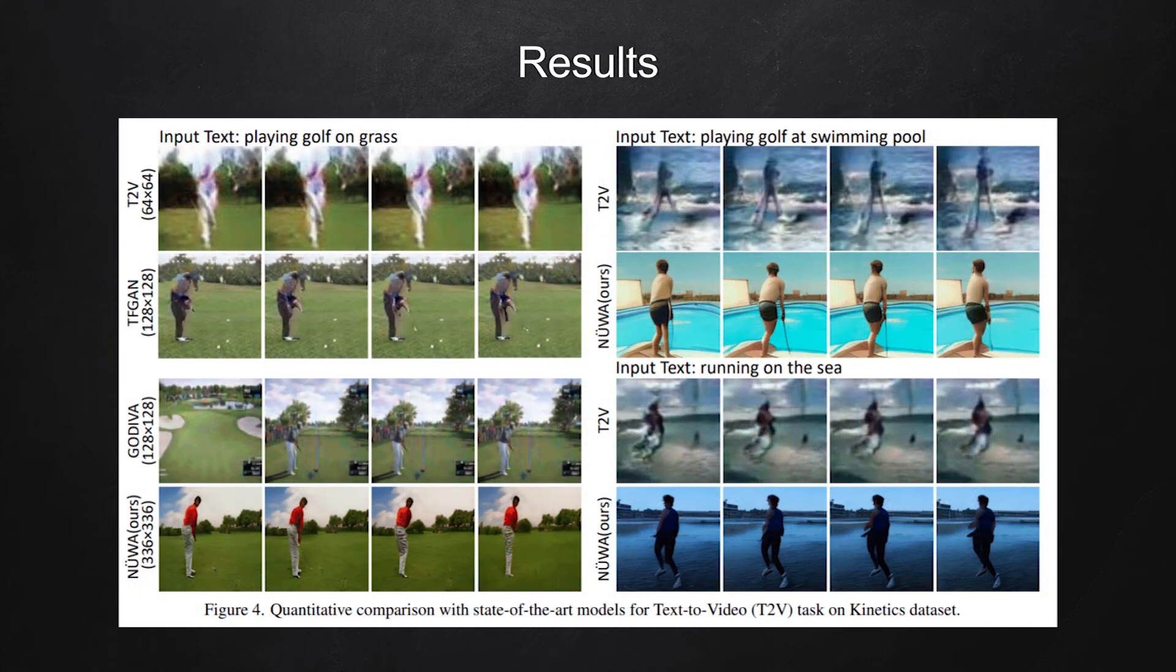This figure shows qualitative results on text to video tasks. Instead of the previous task which produced an image given a sequence of text, in this task, the NEWA model tries to produce a sequence of images.